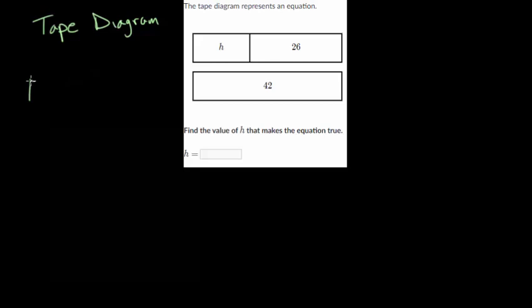For this one, the top tape diagram, this H and this 26 could be length 1. We don't know what the length is, but we know it has to equal the length below it because you can see they're stacked up next to each other. The length of this one—notice they start at the same point—is equal to the length of the other one. They end at the same point, so we can say that...